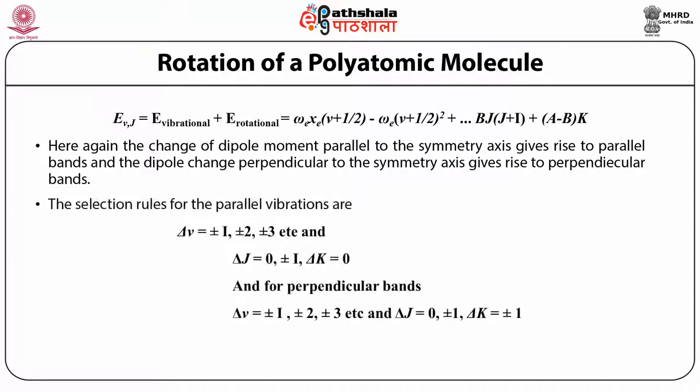The selection rules for parallel vibrations are delta_nu = ±1, ±2, ±3, etc., delta_J = 0, ±1, and delta_K = 0. And for perpendicular bands, delta_nu = ±1, ±2, ±3, delta_J = 0, ±1, while delta_K = ±1. Thus, in both cases we have R, P, and Q branches.